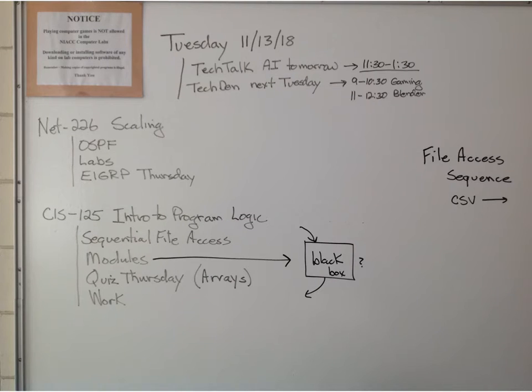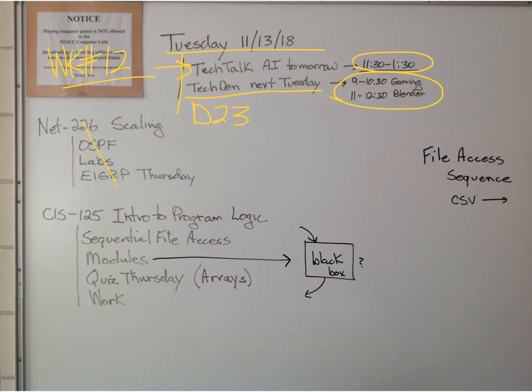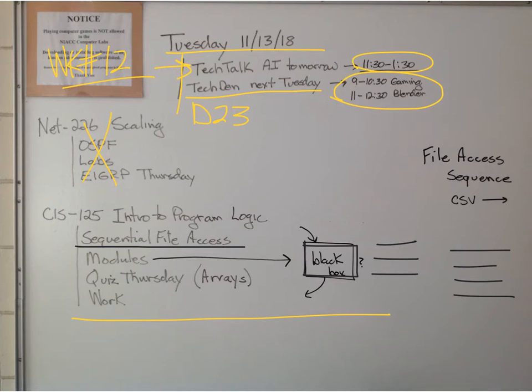This is day twenty-three. We're on week twelve. It's Tuesday. Tech Talk tomorrow. Tech Den next Tuesday. Gaming and Blender. Tomorrow is artificial intelligence. I reviewed a little bit about the black box. We can define functions and then call them up in separate code. We did some more sequential file. Talked a little bit about modules. Quiz this Thursday coming up. On arrays. And then we did some work.